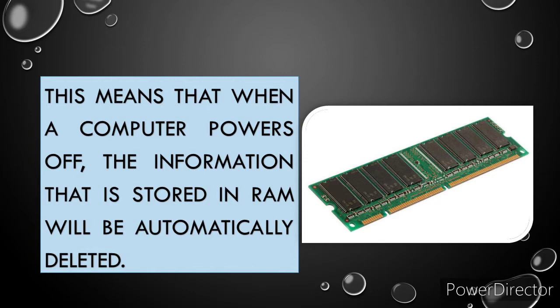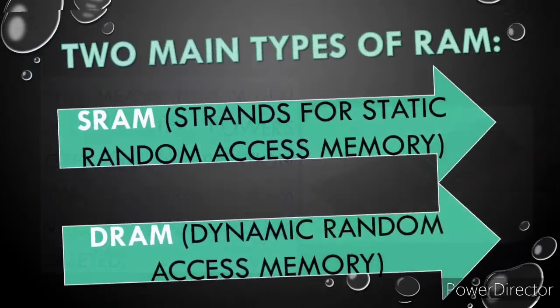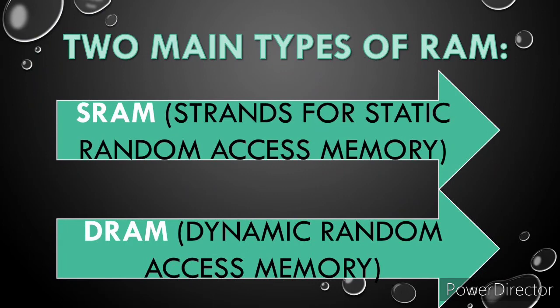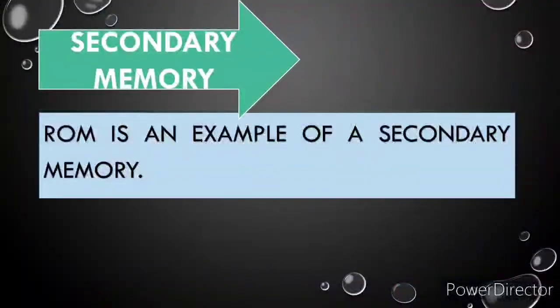That's why when a computer powers off, the information that is stored in ROM will be automatically deleted. There are two main types of ROM: the SROM, or Static Random Access Memory, and the DROM, which means Dynamic Random Access Memory. ROM is an example of a secondary memory.